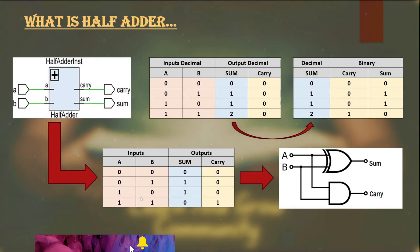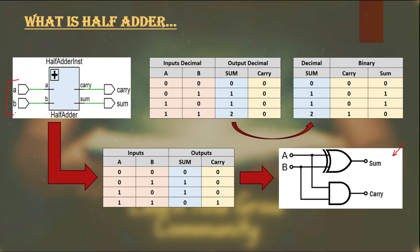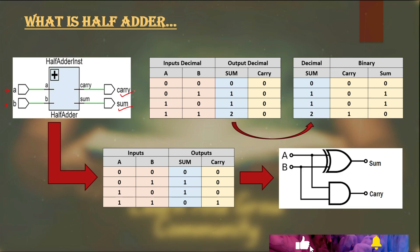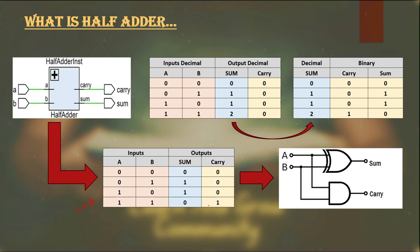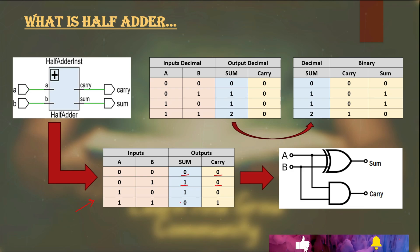Let's understand the half adder first. This is the basic structure of a half adder. It will have two inputs, A and B, and two outputs: the sum of the inputs and the carry of the inputs. These are binary type signals that can take zero and one values. This is the truth table: for zero and zero input, sum is zero and carry is zero. For zero and one, sum is one and carry is zero.